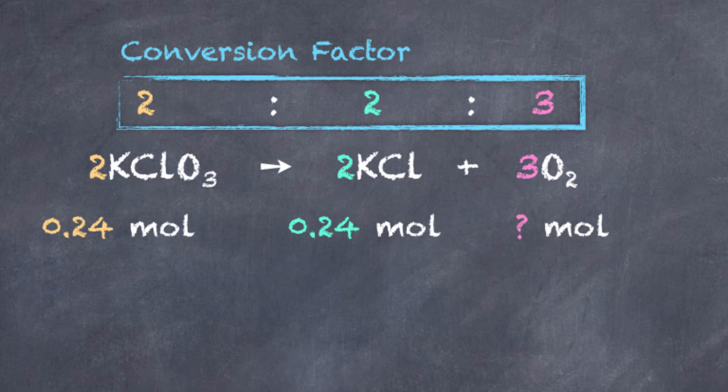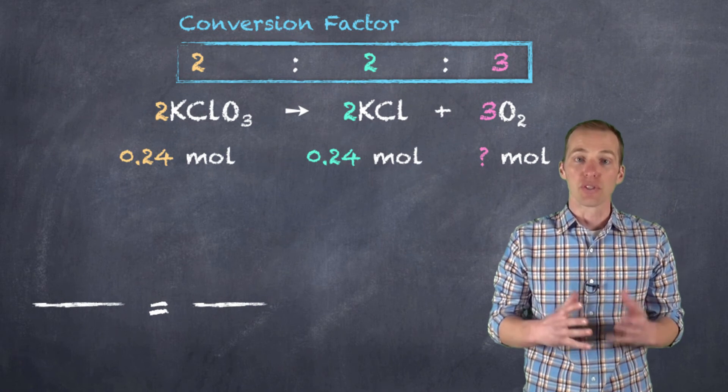That is, I know that two moles of potassium chloride are going to produce three moles of oxygen gas. Or, another way of saying that is that there's going to be one and a half times as much oxygen gas produced as there is potassium chloride used up. That's that two to three ratio. So let's do a conversion similar to our currency conversion by setting up our conversion ratio.